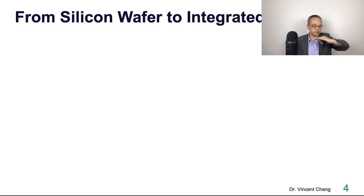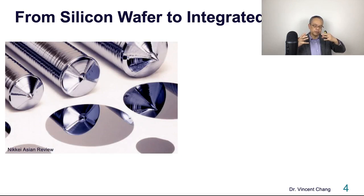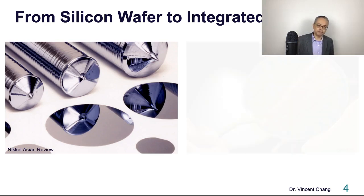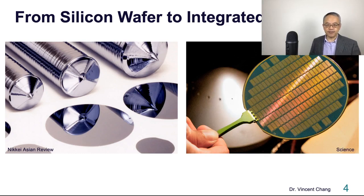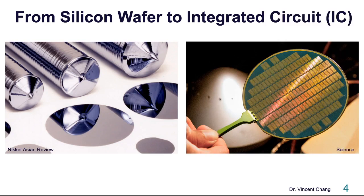If you cut the ingot, it becomes a wafer. The wafer could be a 6-inch, 8-inch, or 12-inch wafer — a 300-millimeter wafer diameter. And then it becomes the silicon wafer, which is processed into an IC — an integrated circuit.